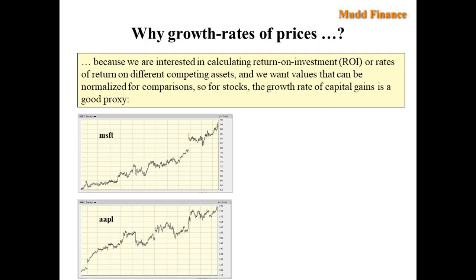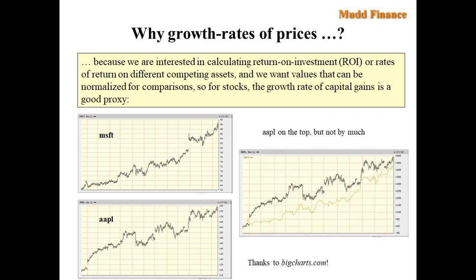Well, we are interested in calculating return on investment or rates of return on different competing assets, and we want values that can be normalized for comparisons. So for stocks, the growth rate of capital gains will be a good proxy. Here's an example comparing Microsoft to Apple for 2017. When you take a look at these, it's not very clear which of these two companies performed best. But if you instead compare the growth rate of the two stocks, you can see that Apple came out on top but not by very much. And you can see that earlier in the year, Apple was doing considerably better than Microsoft, but Microsoft caught up.